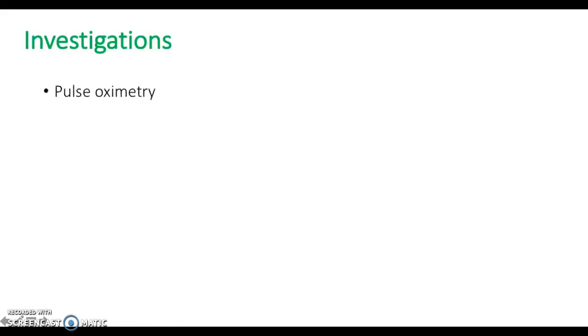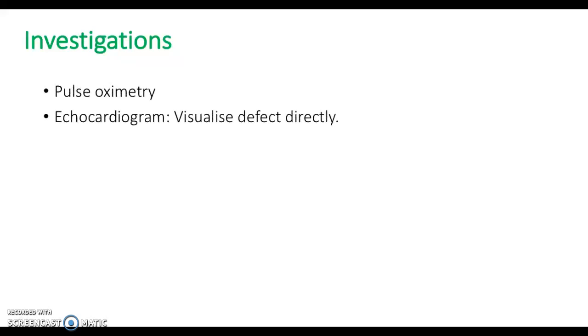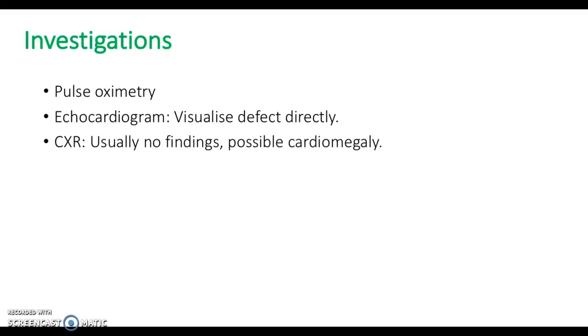Let's talk about what investigations we can do to diagnose an ASD. Pulse oximetry. An echocardiogram — you can visualise the defect directly when you use an echo. Chest x-ray — usually there aren't any findings, however you may see cardiomegaly. An ECG, which can exclude a right bundle branch block for adults that are having arrhythmias.